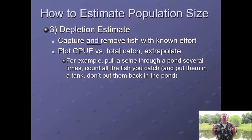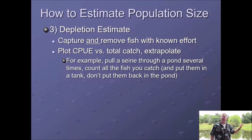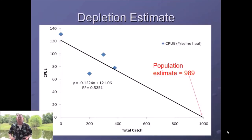From a practical standpoint: we pull a seine haul all the way across the pond — that's one unit of effort. In that seine haul we take all the fish out, count them, and put them in a holding tank. We don't put them back in the pond. Now that pond has a little fewer fish than when we started — we have depleted it. Then we do that again: same amount of effort, same seine pull, count the fish, hold them in the tank. The pond has even fewer fish. Each time we deplete that population.